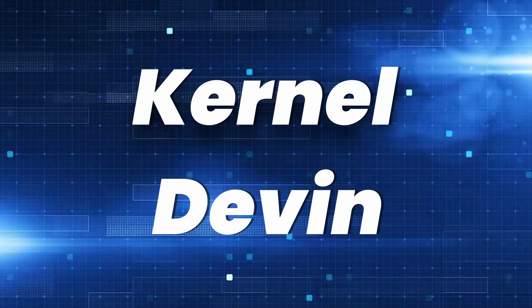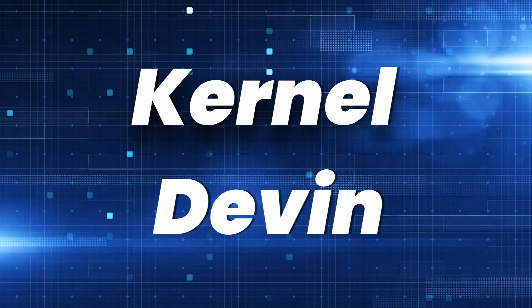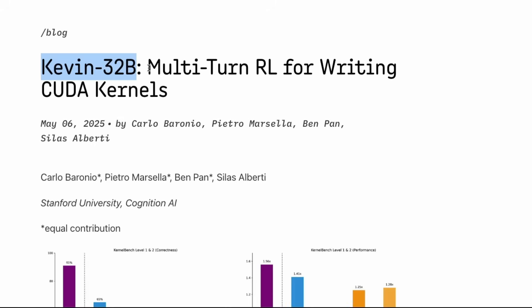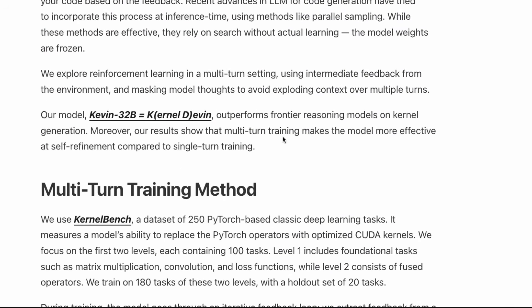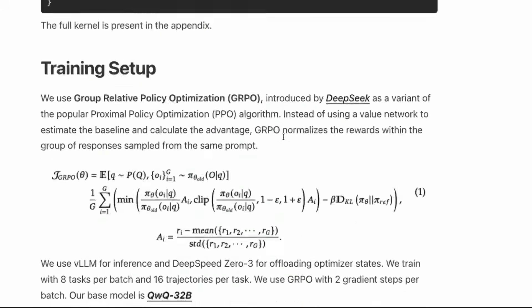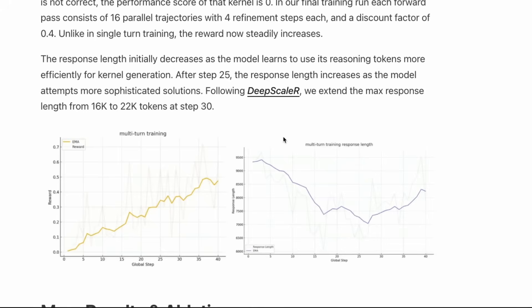This model is called Kevin - kernel plus Devin. They've used something called multi-turn reinforcement learning for fine-tuning this model. There's a very interesting aspect of how when you're doing fine-tuning with chain of thought, there is an exploding context window problem that they've managed to handle. This model is a GPU kernel programmer. If you're using NVIDIA GPUs or CUDA, you need somebody who understands kernel programming to write GPU kernels that will do certain things for you.